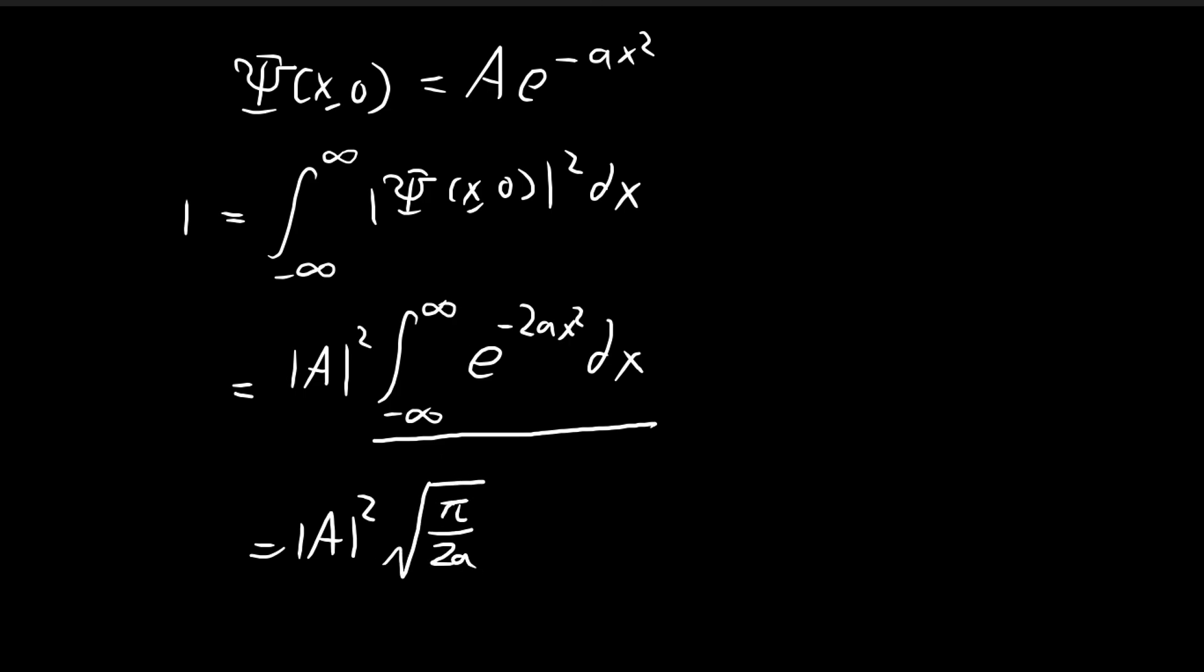The reason is because, first of all, we can consider the Gaussian integral. We know that this integral here is equal to the square root of π. You can prove this using a double integral. I'm not going to go through that proof in this video, but if you're interested, you can find out how to prove this.